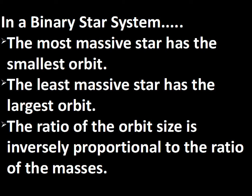If we calculate the ratio of the orbit sizes — each star has its own orbit — we'll find that it's inversely proportional to the ratio of the masses. So if one has an orbit size of eight units and the other has an orbit size of two units, that orbit size indicates a factor of four in the ratio of the masses. The masses will differ by a factor of four.